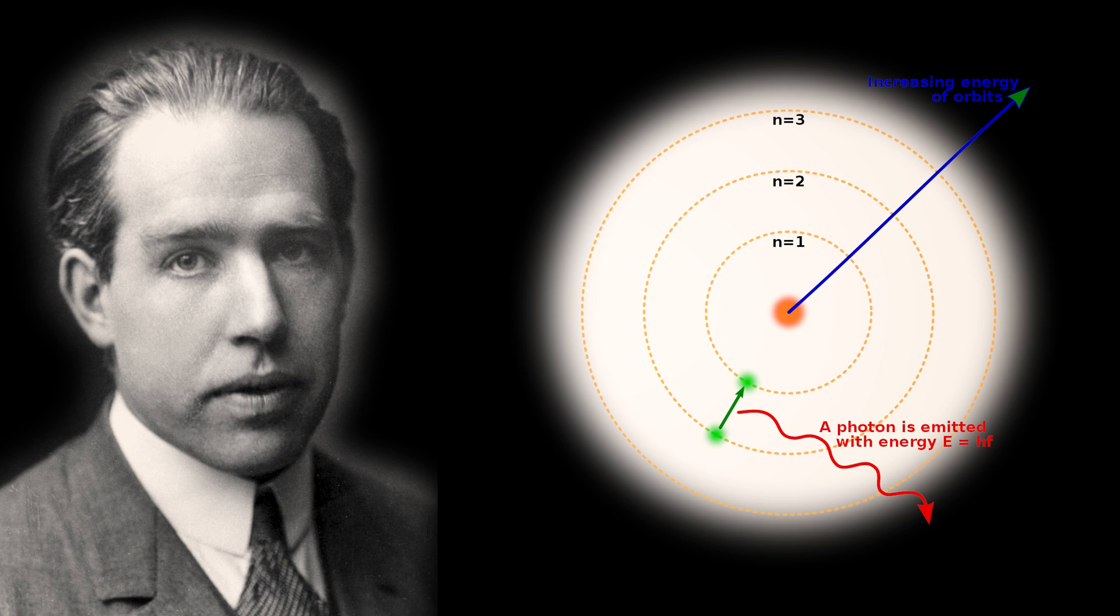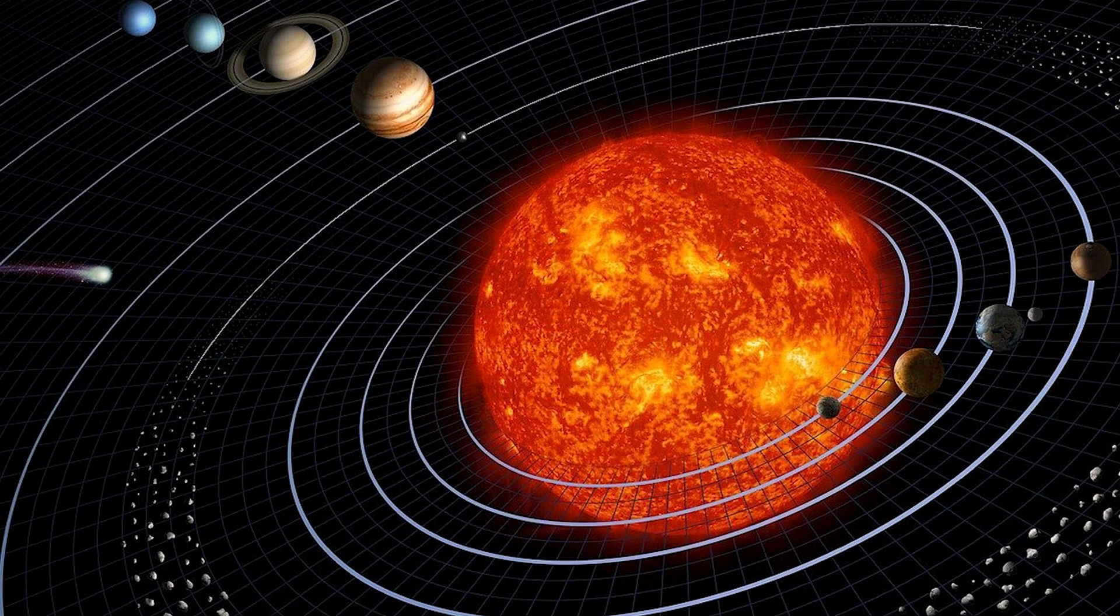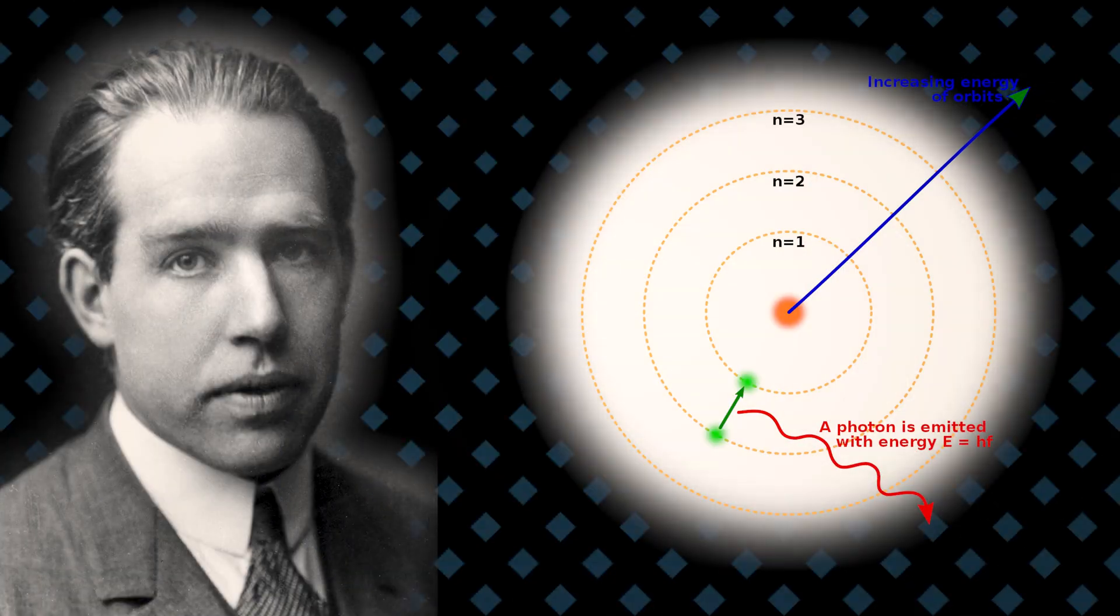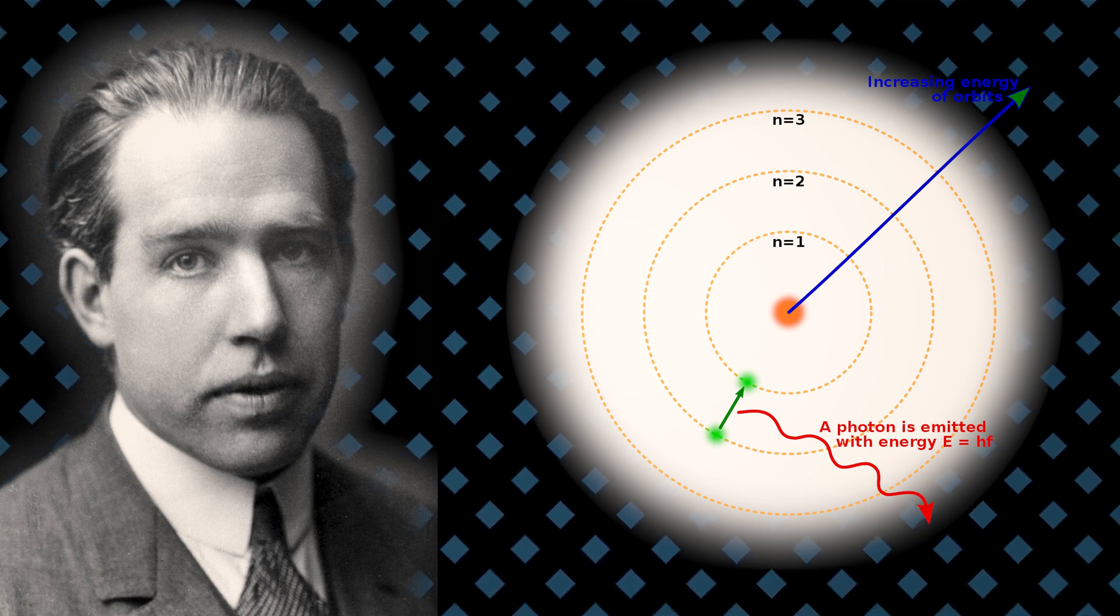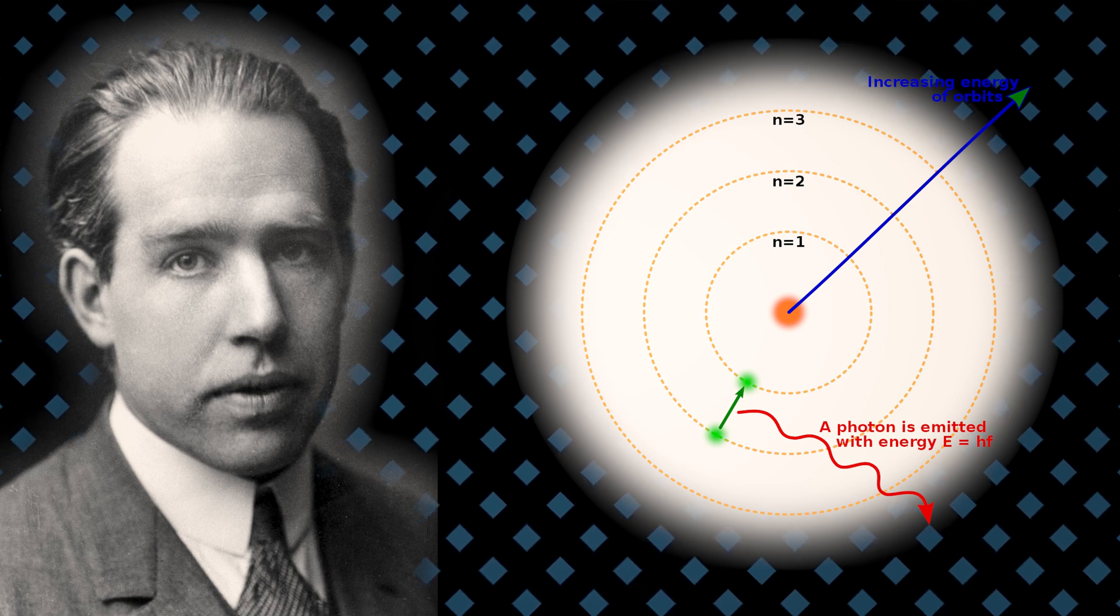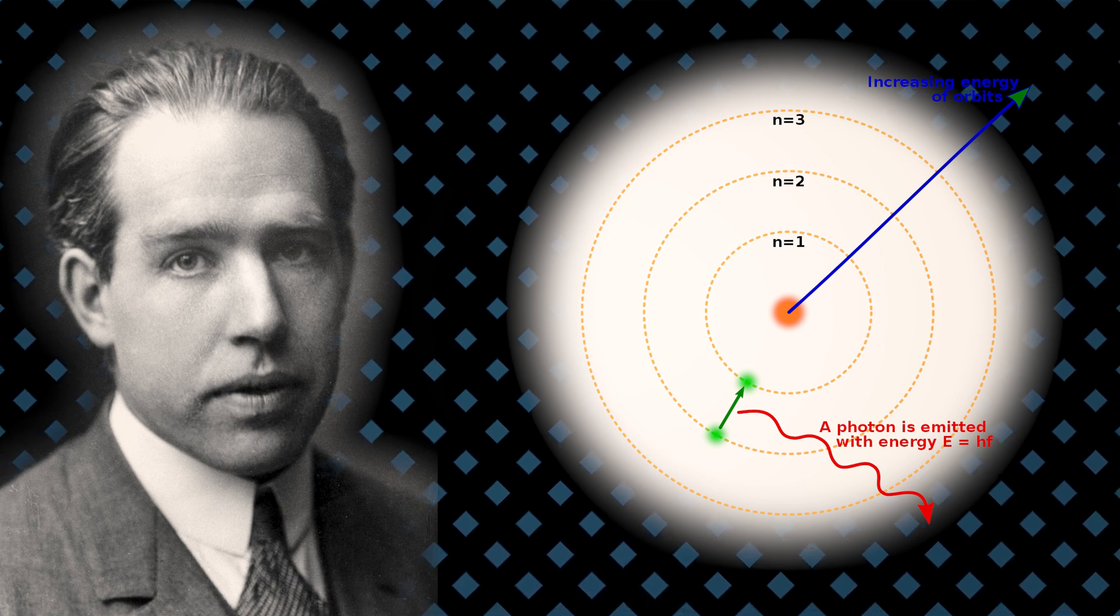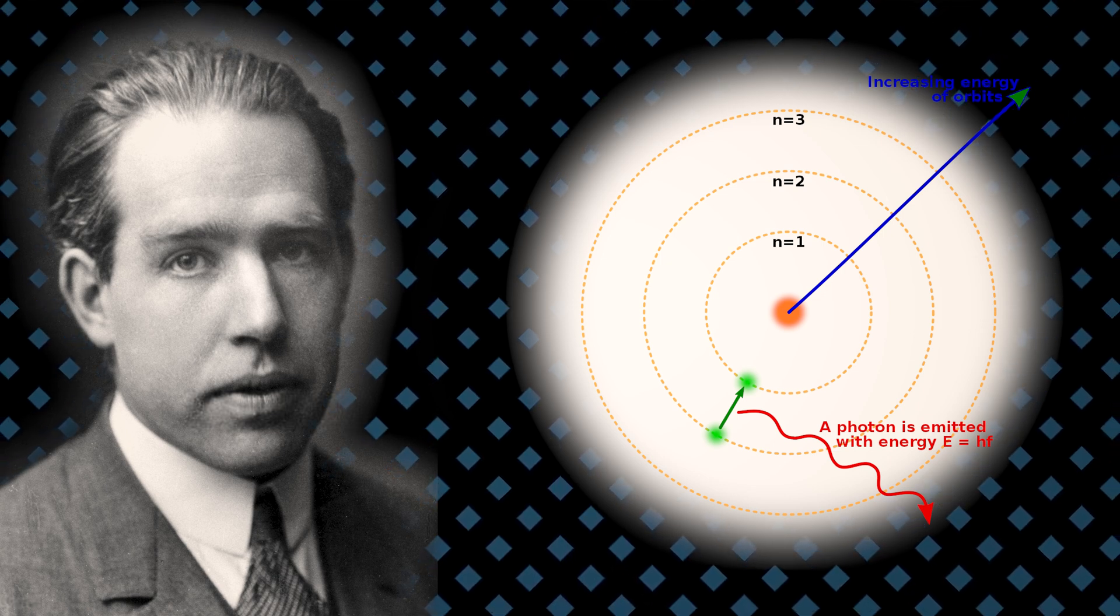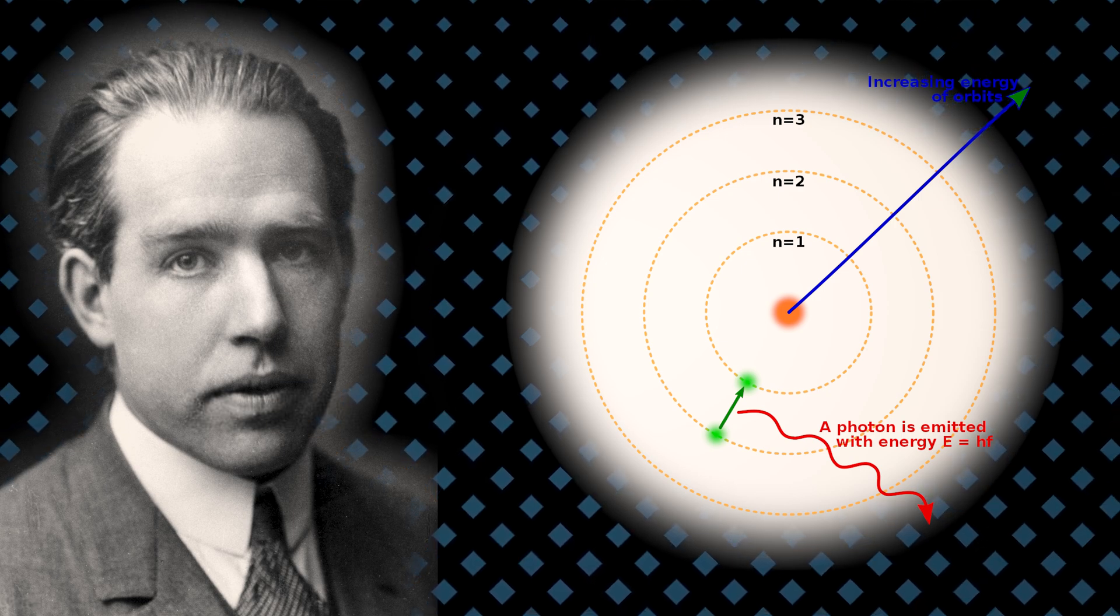He proposed that electrons orbit the nucleus in specific quantized energy levels or orbits akin to planets revolving around the Sun. He also suggested that electrons can transition between these levels by absorbing or emitting energy in discrete packets known as quanta of light or photons, facilitating the exchange of energy within the atom. This phenomenon is specifically referred to as quantum leaps or quantum jumps.